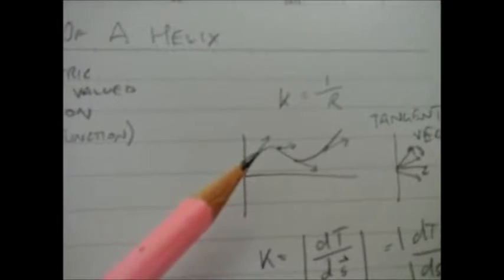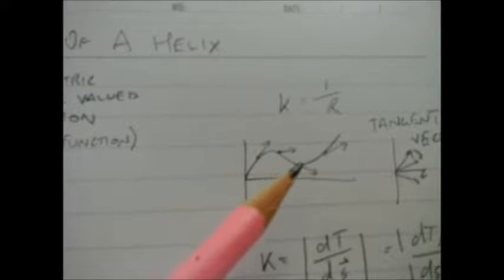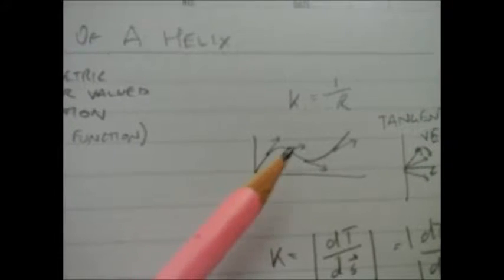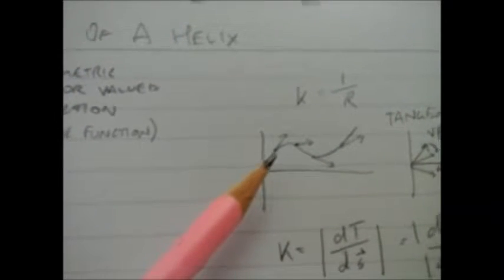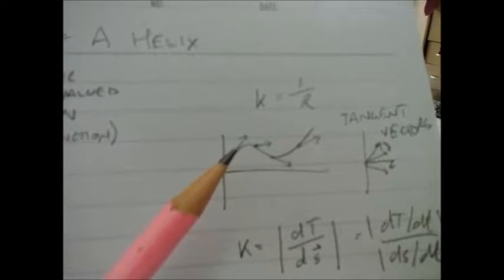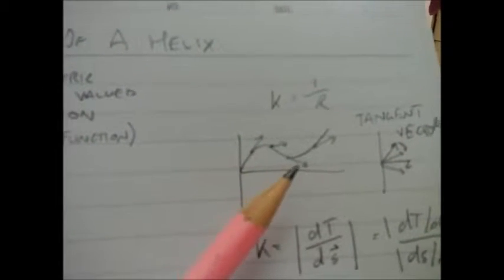Now imagine I have some function which varies like this, and we want to figure out how curvy it is at any point. I could take tangent vectors. If I differentiate this function, I'd get gradients at each point, and I could consider these as tangent vectors. Obviously, the more these tangent vectors change, the more curve I'm going to get.